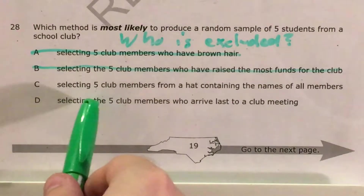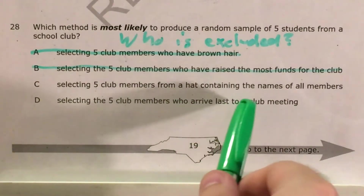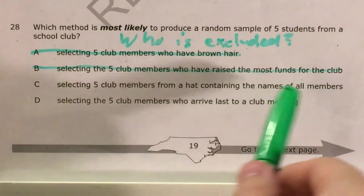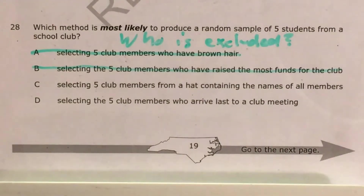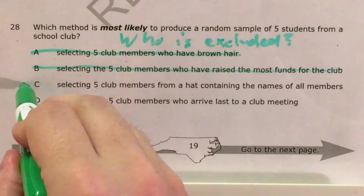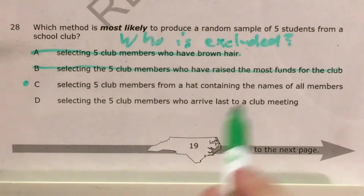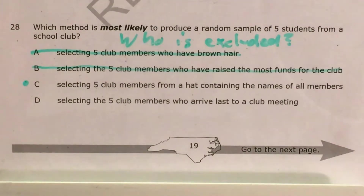Choice C — selecting five club members from a hat containing the names of all members. So this would be like a slip of paper, reach in and grab five thing. This one looks pretty good. This one looks like it doesn't exclude anybody, but let's knock out choice D just to be sure.